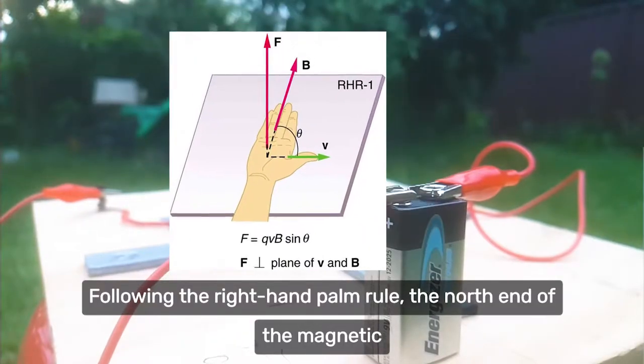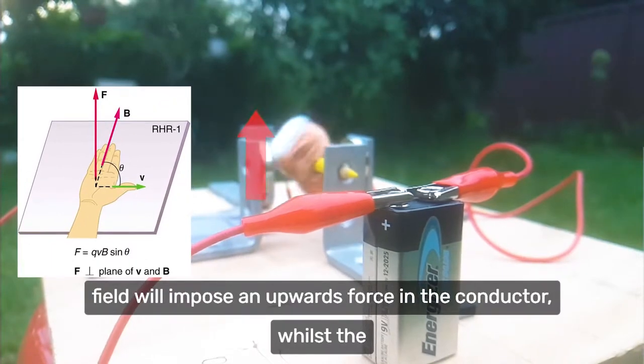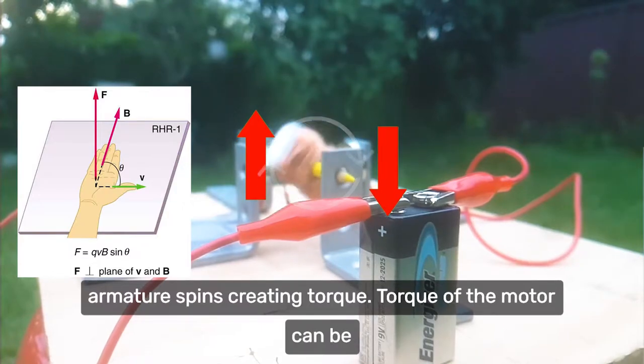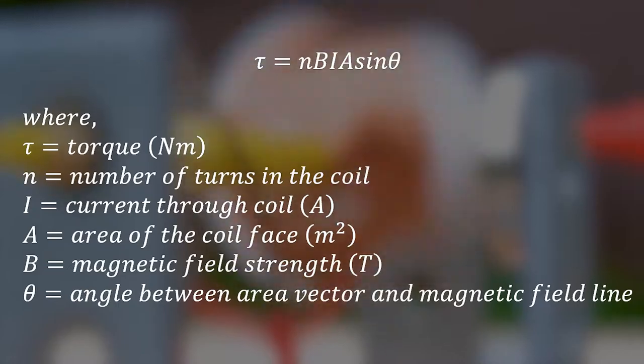Following the right hand palm rule, the north end of the magnetic field will impose an upwards force on the conductor, whilst the southern end will experience a downwards force, hence the armature spins creating torque. Torque of the motor can be calculated using the following equation: Torque equals NBIA sine theta.